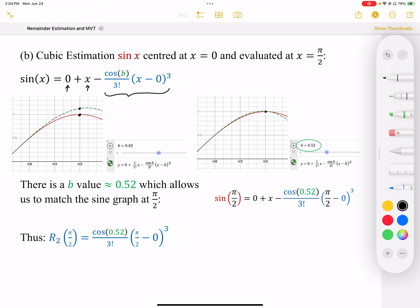So again, we can't necessarily find exactly where that b value is. It's approximately around 0.52. But again, we can bound it. We know it exists between 0 and pi over 2.